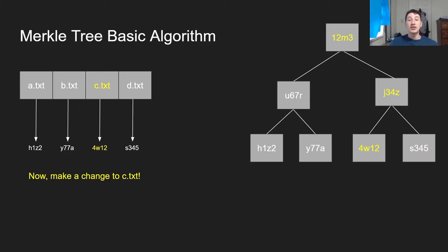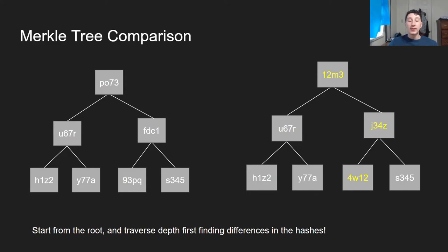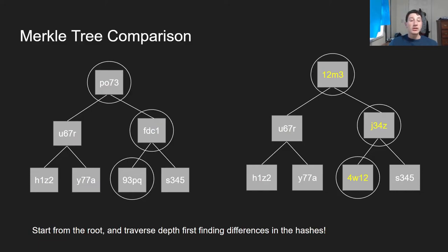After I make that change, if I want to compare the previous Merkle Tree with the current Merkle Tree to see what file actually changed, I would do the following. I would look at the roots — the root is different, so I know there's a difference somewhere and I'll have to traverse it. The right child of the root is different, so I'm going to traverse the right path. Ultimately, that child — 93pq versus 4w12 — is different, and so that's where the differences lie. Now, instead of having to propagate every single file in a naive implementation that wastes network bandwidth, I can only propagate the changed file.